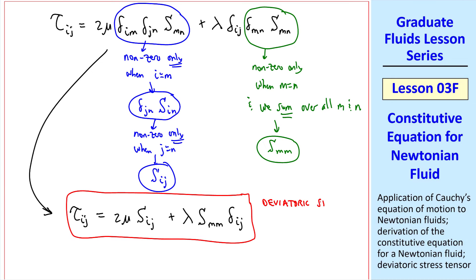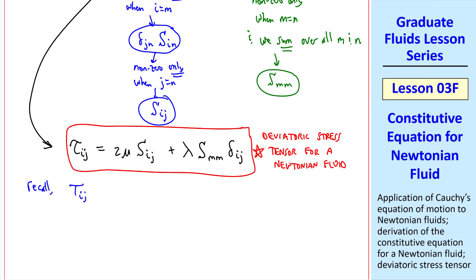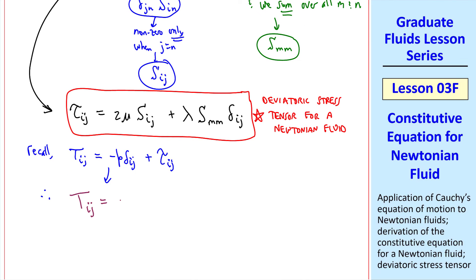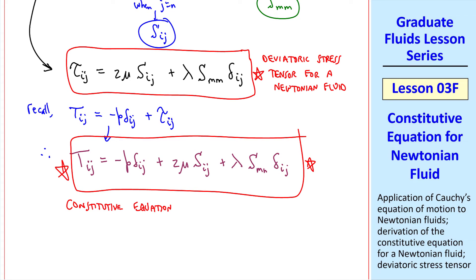Similarly, these two terms are non-zero only when m equal n. And we sum over all m and all n, since both of them are repeated indices. So this reduces to smm. Plugging those in, tauij is 2 mu sij plus lambda smm delta ij. This is thus our deviatoric stress tensor for a Newtonian fluid.